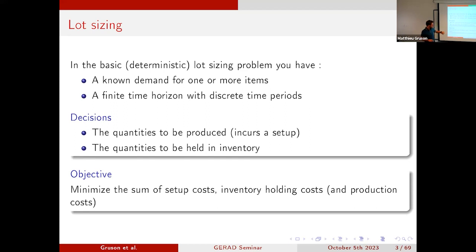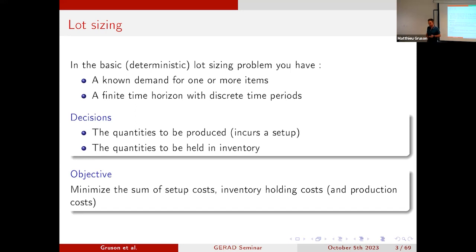The objective is to minimize the sum of operational costs: setup costs, production costs, and inventory holding costs. The production cost is in parentheses because usually in the lot sizing literature we consider the production cost is constant over the time horizon, so we don't put it in the objective function. This is the basic lot sizing problem.